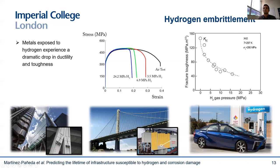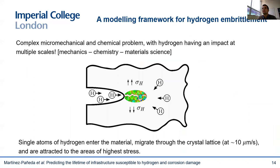So there's a strong need for reliable models that can capture the underlying physics and predict hydrogen-assisted fractures at scales relevant to engineering practice. These models are going to be multi-physics and multi-disciplinary, as this is a chemo-mechanical problem. We do know that hydrogen, coming from water vapor, gas, or an electrochemical solution, enters the metal, diffuses through the crystal lattice, and accumulates in areas of high hydrostatic stress or high volumetric strains, where the lattice expands and there's more space for the hydrogen to accumulate.